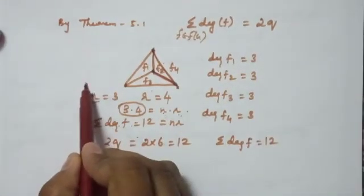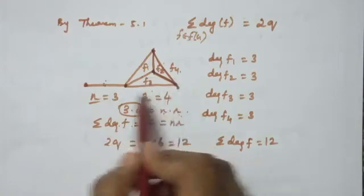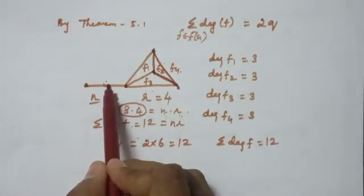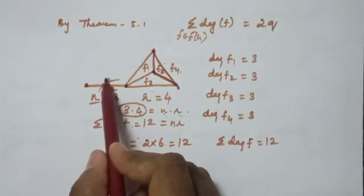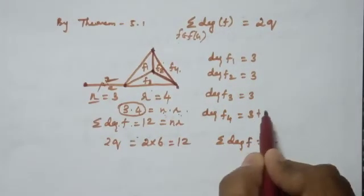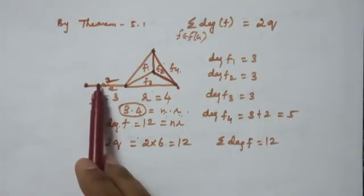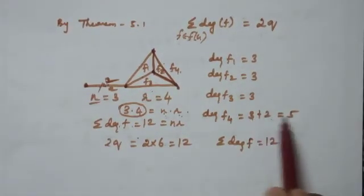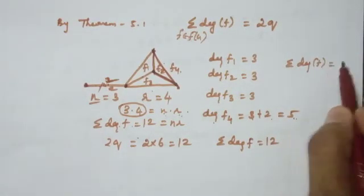Now, if we add one more edge to the graph, this creates a cut edge — if you remove it, the graph becomes disconnected. When counting the degree of a face, a cut edge is counted 2 times. So the degree of face F4 becomes 3 plus 2, which equals 5.